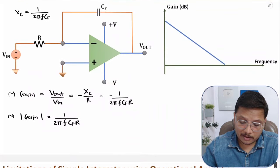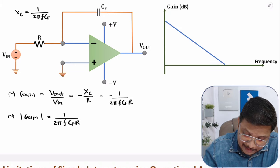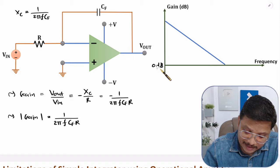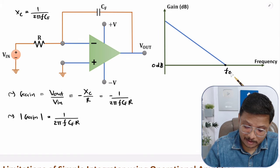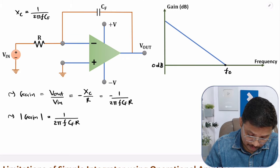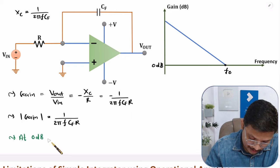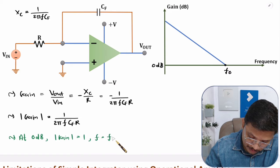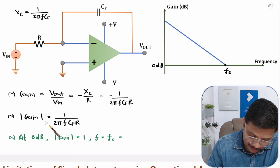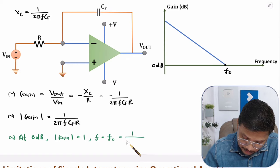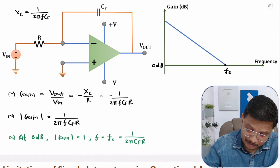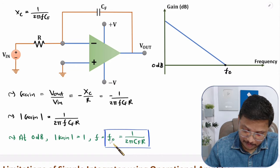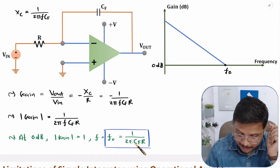One more basic: consider the point where gain is 0 dB. At 0 dB, we have frequency F0. At 0 dB, gain equals 1, so substituting: 1 = 1/(2π × F0 × Cf × R), which gives F0 = 1/(2π × Cf × R). This equation is very essential — one should know the frequency at which gain equals unity is 1/(2π × Cf × R), where R is the resistance and Cf is the feedback capacitance.